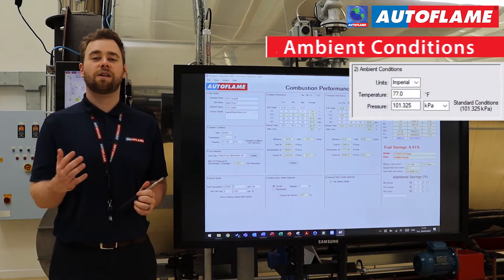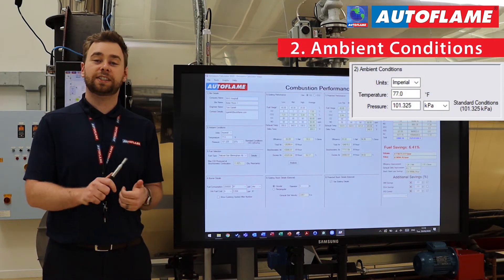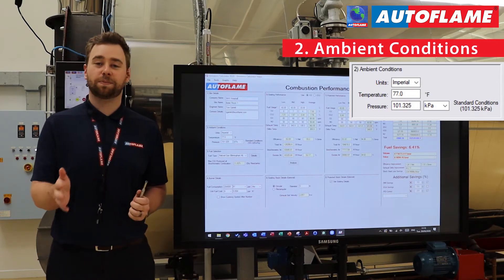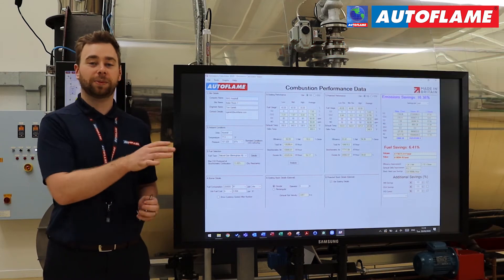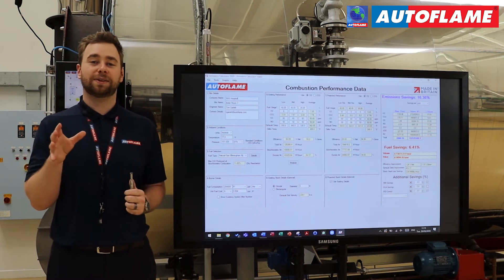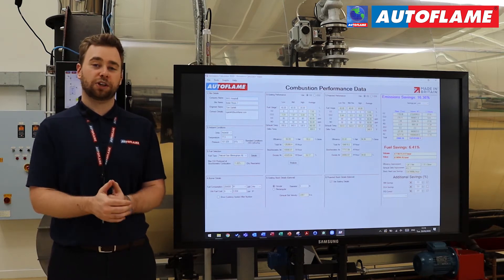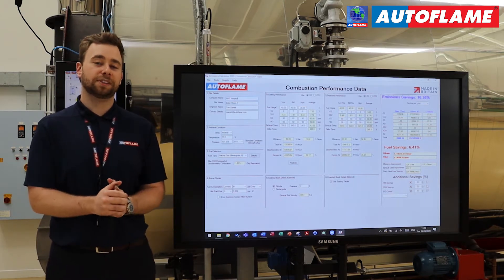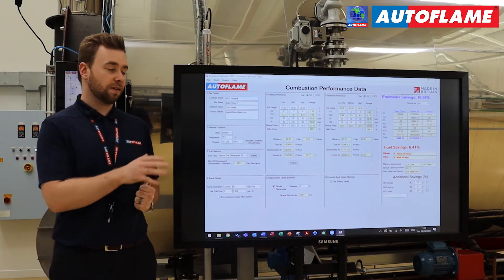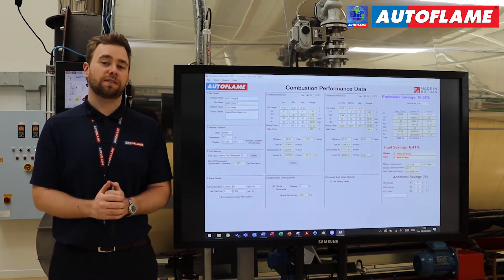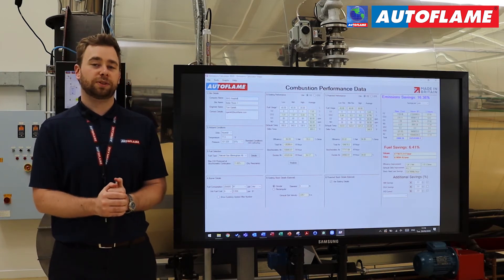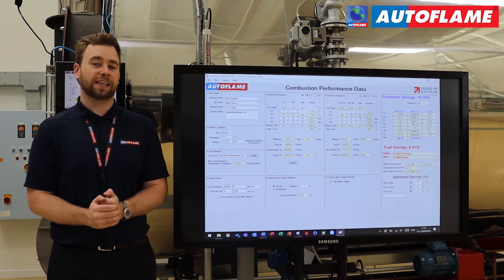Section two covers your ambient conditions. This is where you define your units — in our case we'll be using Imperial. You also need to input your ambient temperature; we're going to be using 77 degrees F. Then you need to input your ambient pressure. On the previous emissions calculator this was an offset from standard sea level, but this is now an absolute value — so for example in kilopascals it's 101.325, which is ambient sea level.